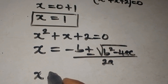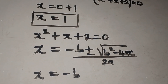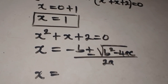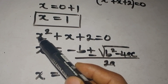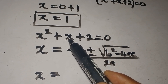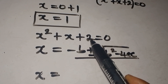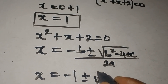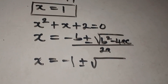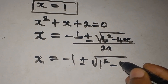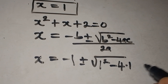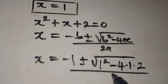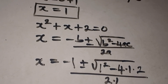Let's identify our values: a is the coefficient of x squared which is 1, b is the coefficient of x which is also 1, and c is the constant which is 2. Substituting: x equals minus 1 plus or minus the square root of 1 squared minus 4 times 1 times 2, all divided by 2 times 1.